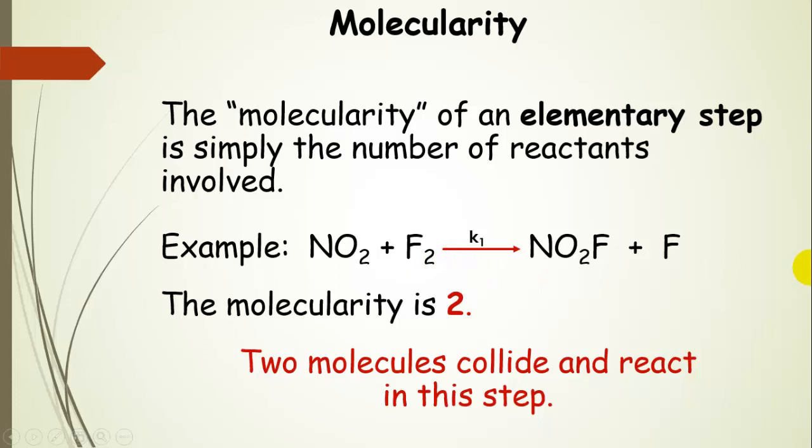So we would say the molecularity of this step is two. We're literally saying that nitrogen dioxide collides in this step with fluorine to produce these products, which will then go on and react further in the mechanism.